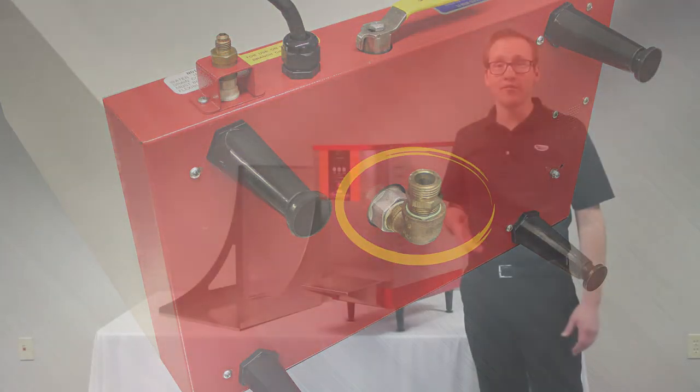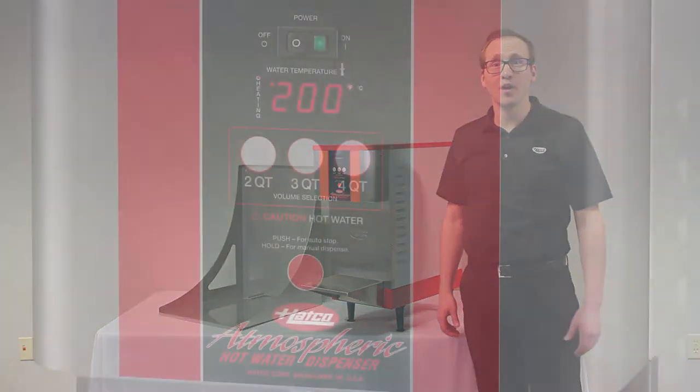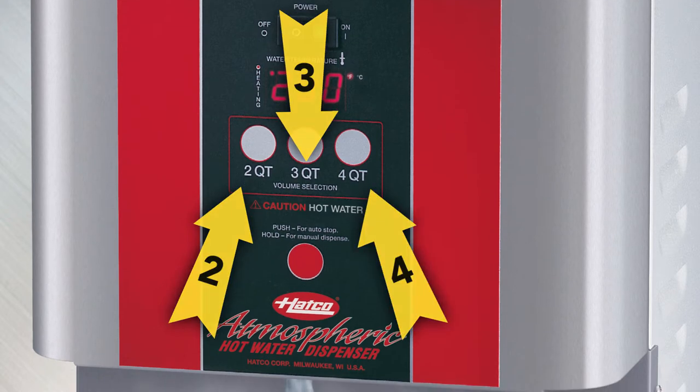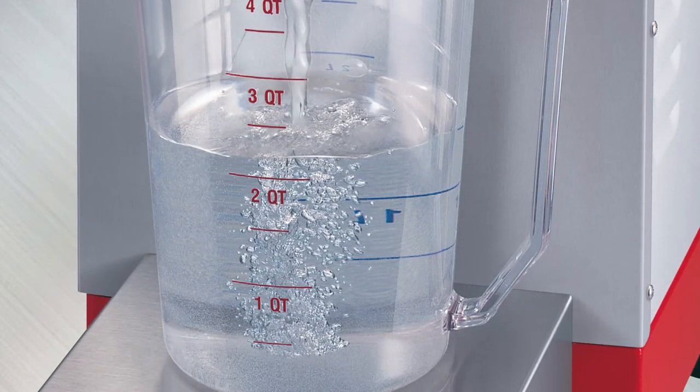No longer do you have to open a spigot and monitor your hot water pour. Press the metered pour buttons for 2, 3, or 4 quarts and the water is delivered while you perform other tasks.